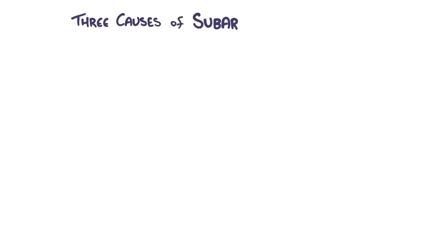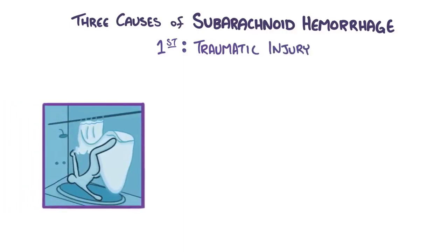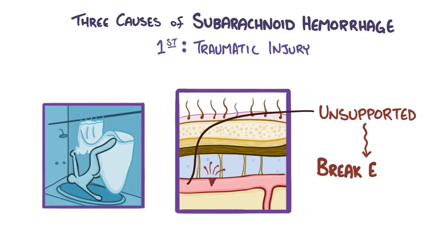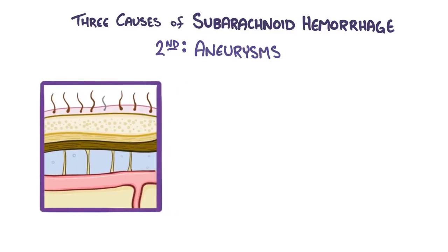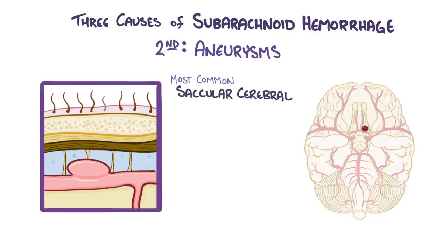Three things can cause a subarachnoid hemorrhage. The first and most common cause is a traumatic injury, like falling in the bathtub and hitting your head. Arteries in the subarachnoid space are unsupported and can easily break. The second cause is an aneurysm — a blood vessel that has weak walls and starts to bulge out to about one and a half times larger than its normal diameter. The most common aneurysms in the brain are saccular cerebral aneurysms, which have a characteristic rounded shape on one side of the artery and are also called berry aneurysms.